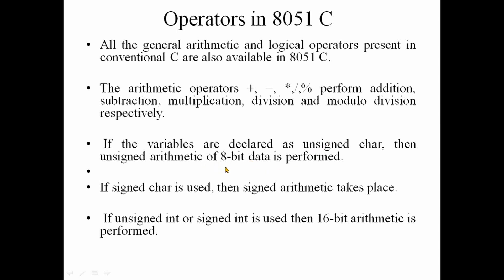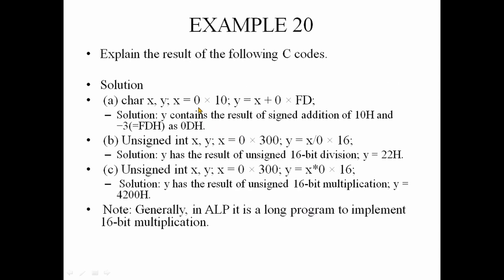Here we have arithmetic operation — 8-bit. Here we have signed and unsigned. We will declare the variables as unsigned characters. When X is equal to Y, we assign X plus, and we will declare the variables as unsigned.